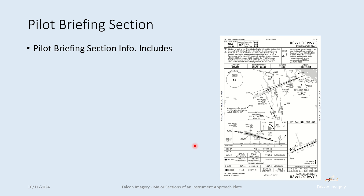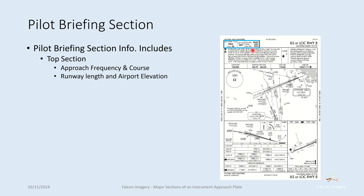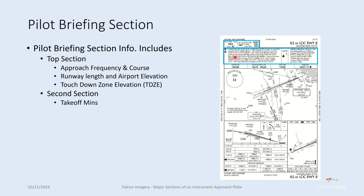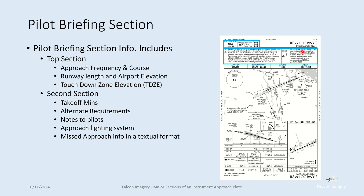In the pilot briefing section, the top area gives us the approach frequency and course — in this case it's an ILS, so we have a localizer frequency — along with runway length, airport elevation, and touchdown zone elevation. The second section provides information such as any alternate takeoff minimums, alternate requirements that are non-standard (indicated by the T and A in triangles), notes to pilots such as if the approach can't be used at night, the approach lighting system (MALS in this example), and missed approach information in textual format.